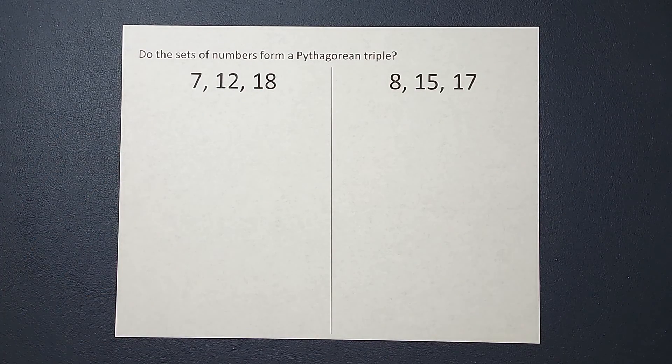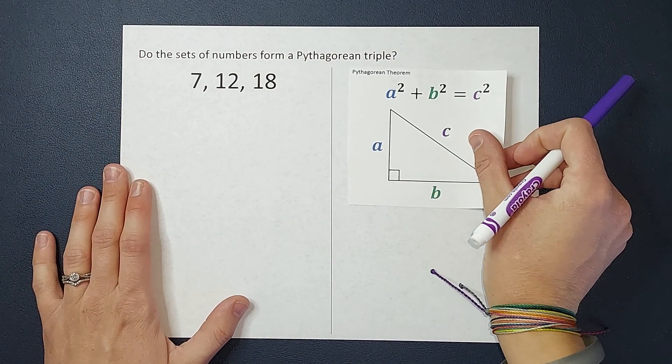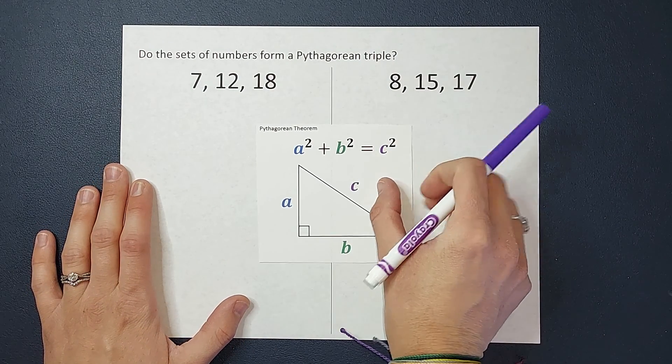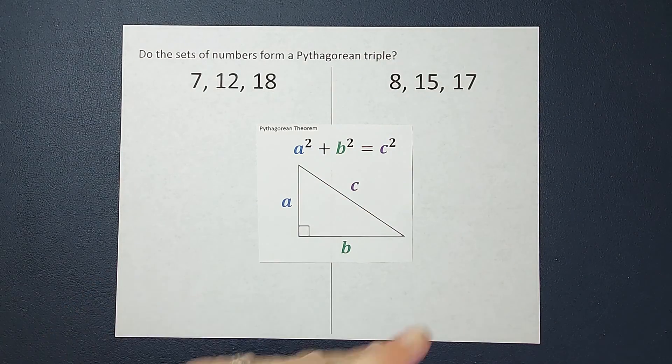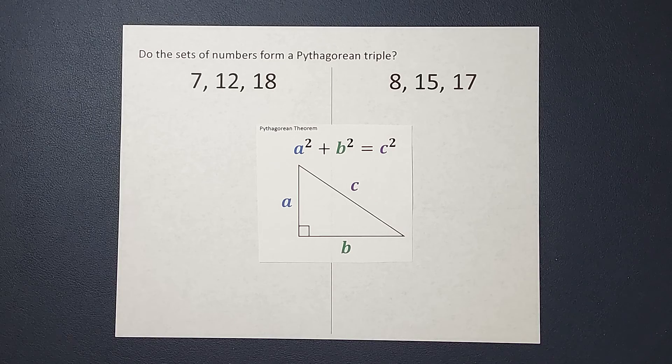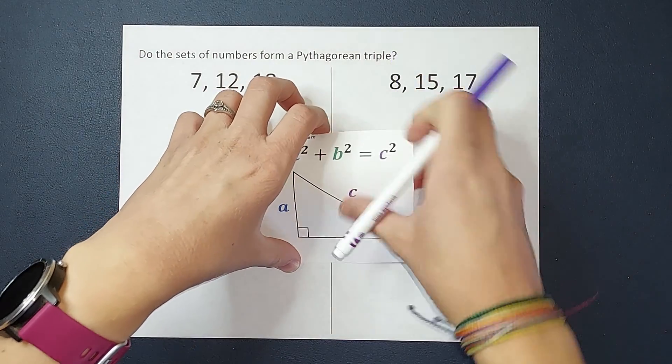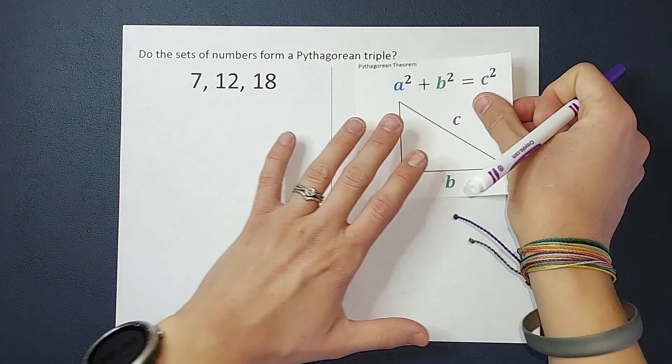So to figure that out, we're going to use, maybe you guessed it, the Pythagorean theorem. I'm assuming you're probably familiar with this. If not, or if you need a refresh, I'll link a video for you in the corner where I go over this in more depth. But this is what we're going to use to determine if these are Pythagorean triples.